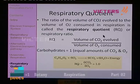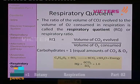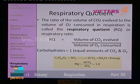Having discussed aerobic and anaerobic respiration, we now move on to the next topic: equations related to respiration — the respiratory quotient. The ratio of volume of carbon dioxide evolved to the volume of oxygen consumed in respiration is called the respiratory quotient, or RQ. To calculate RQ: find the volume of CO2 evolved and divide it by the volume of O2 consumed.